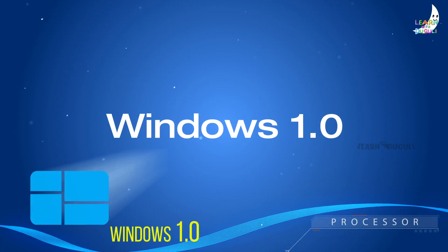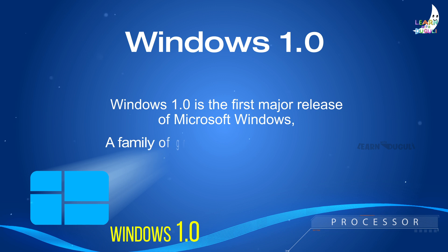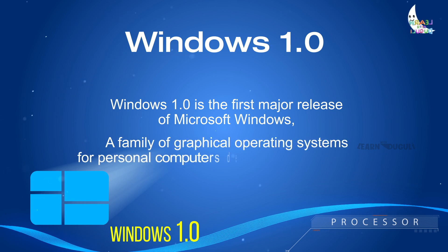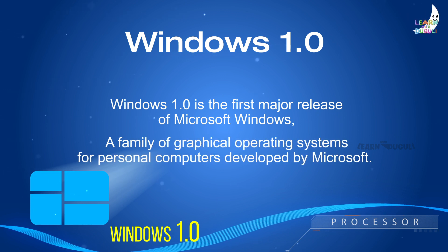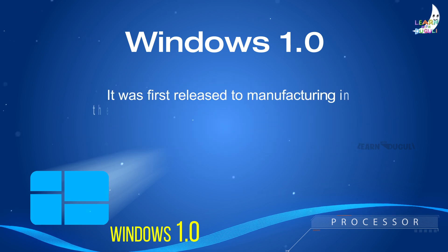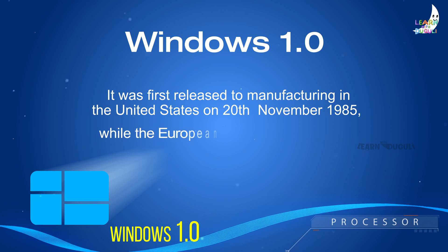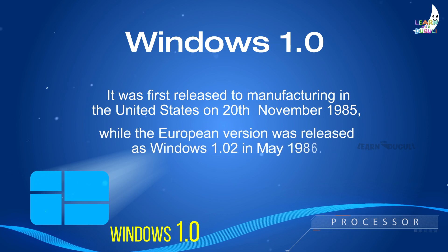Windows 1.0 is the first major release of Microsoft Windows, a family of graphical operating systems for personal computers developed by Microsoft. It was first released to manufacturing in the US on 28 November 1985, while the European version was released as Windows 1.02 in May 1986.